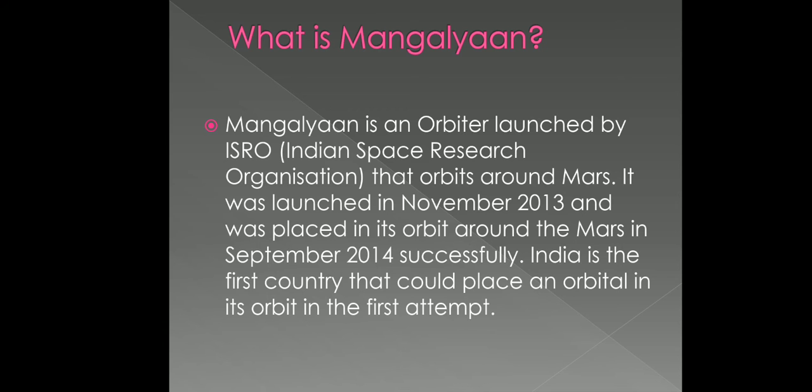Mangalyaan was launched by ISRO around Mars orbit in November 2013 and was placed in its orbit. In September 2014, it reached successfully. India is the first country that could place an orbiter in its orbit in the first attempt.